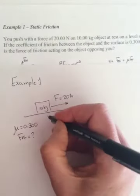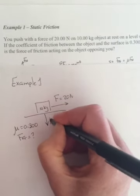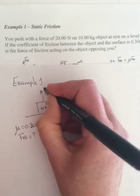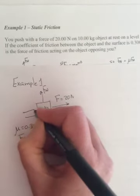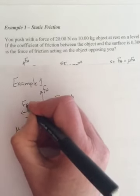So we draw in the rest of our forces. This is FG. This is FN. And this will be friction going backward.